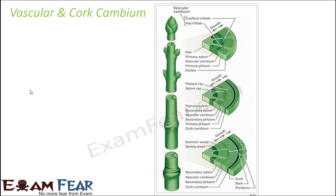Now let us look at vascular and cork cambium together in the figure. In the first figure, we just have the pith, primary xylem, primary phloem, and vascular cambium — just three important layers. With time, this vascular cambium gives rise to new cells by cell division on both inner and outer sides: inner side forms secondary xylem, outer side forms secondary phloem. So the width increases due to these two additional layers. As the amount of secondary xylem increases drastically, the secondary phloem and primary phloem start breaking down, and the epidermis also starts breaking down.